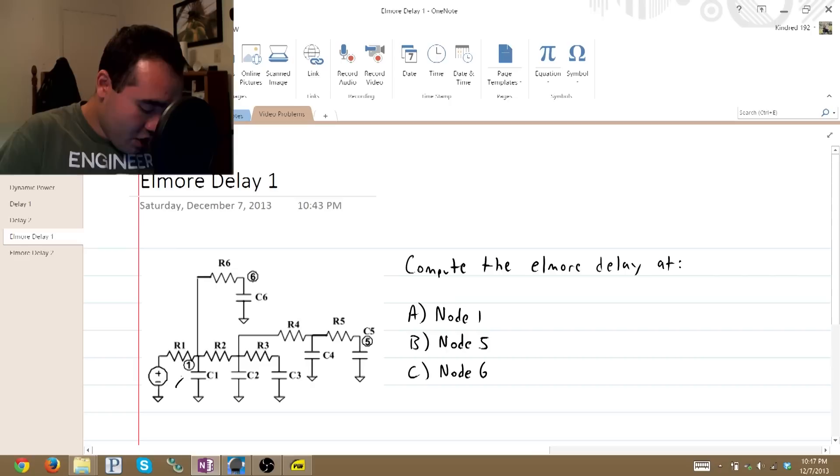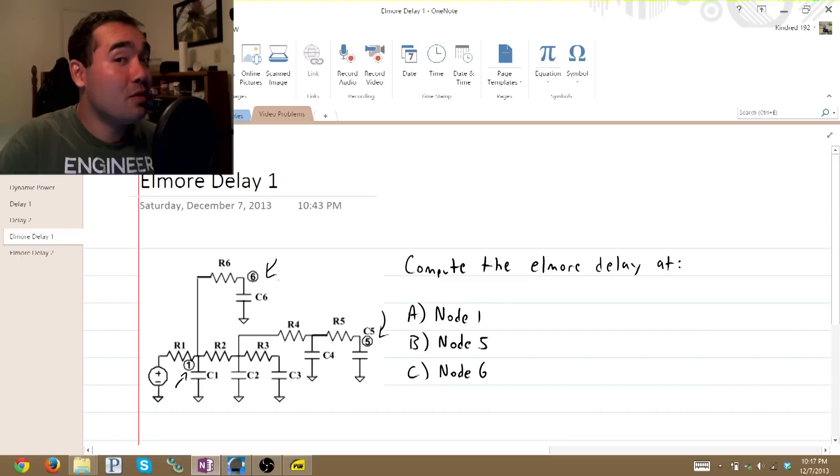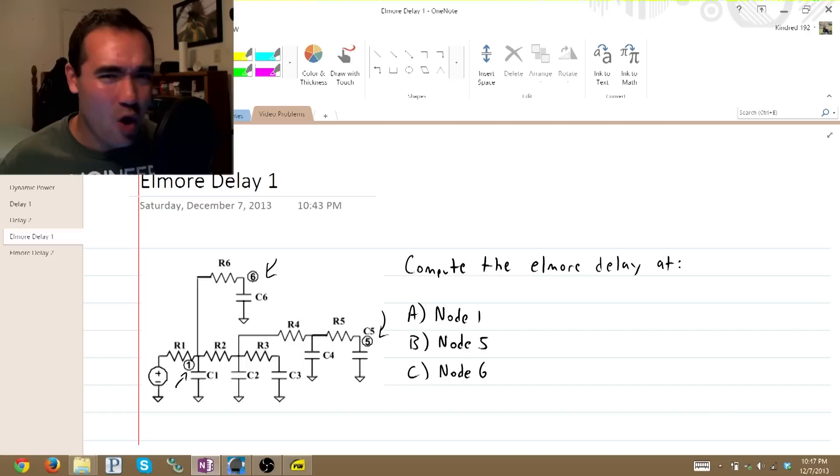We'll be able to get through this super quick. We're looking, all we want to do is calculate the Elmore Delay at three nodes: Node 1, Node 5, and Node 6.